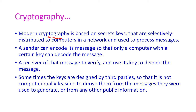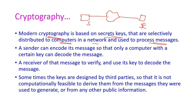In modern cryptography, it is based on secret keys, and the keys are selectively distributed to computers in the network and used to process the messages. The sender and receiver are connected through the network. The sender has its own message and a key. Using the key, the sender will encrypt the message, and the encrypted ciphertext will be transmitted over the internet. The receiver will receive the ciphertext and use their key to decrypt it and get back the original plain text.